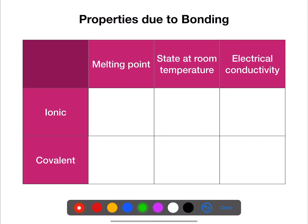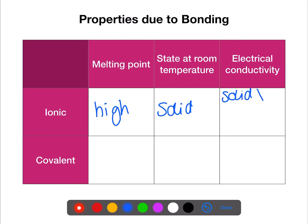There are different properties which occur due to bonding. We're going to look at the properties for both ionic and covalent bonding. Ionic substances are always solids at room temperature and have very high melting and boiling points. They don't conduct electricity as a solid as there are no free charges to move, but they can as a liquid or in solution. This is because the ionic bonds between the ions have been broken and now the ions are free to carry charge.